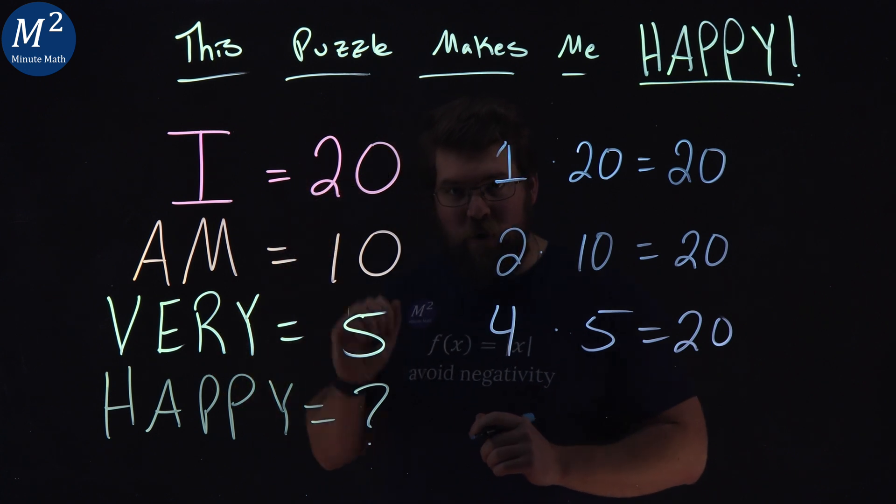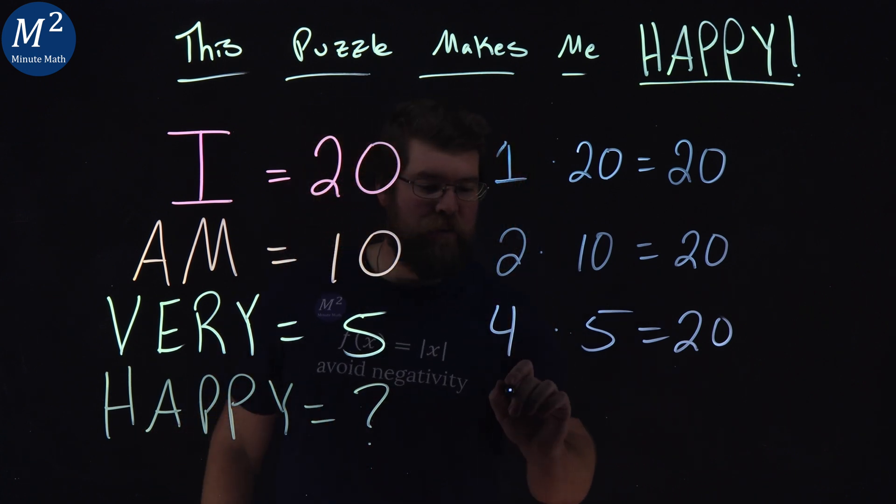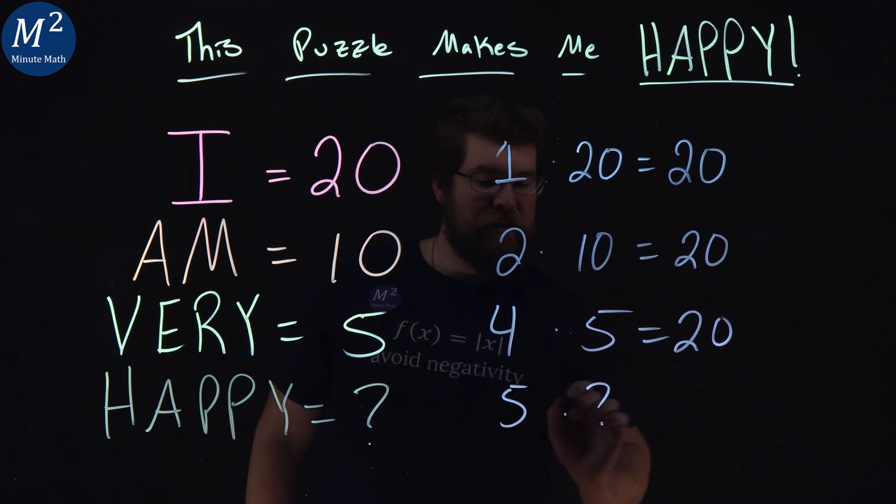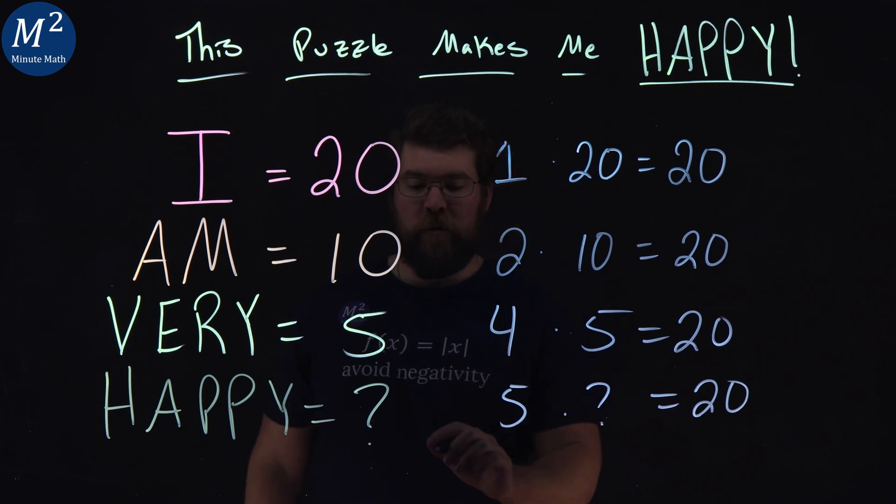Going down here, so here's the reveal. Happy? One, two, three, four, five. Five makes me happy. Times what? Gives me 20. And with that reveal, 5 times 4 equals 20.